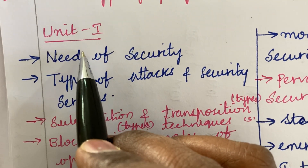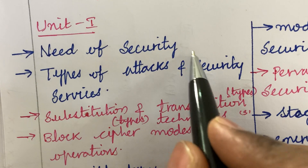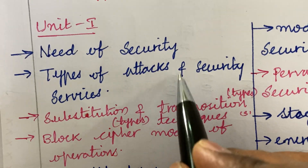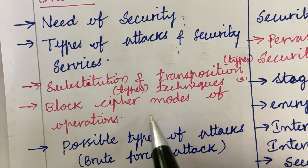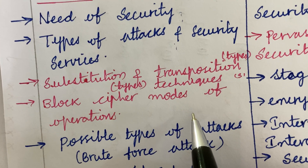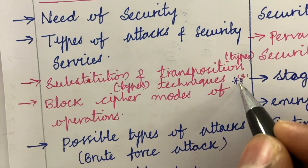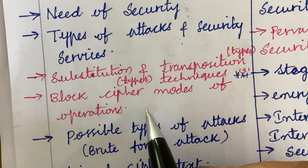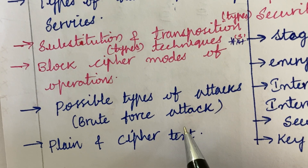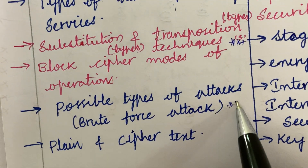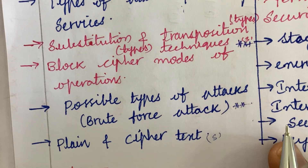The first and foremost question from Unit 1 is the need for security and the types of attacks and security services. This may be in terms of short or put together as a long question. Substitution and transposition and their types and techniques are said to be one of the very important 10-mark questions. Block cipher modes of operation and possible types of attacks — brute force attack is asked several times — and plaintext and ciphertext may be one of the short questions.